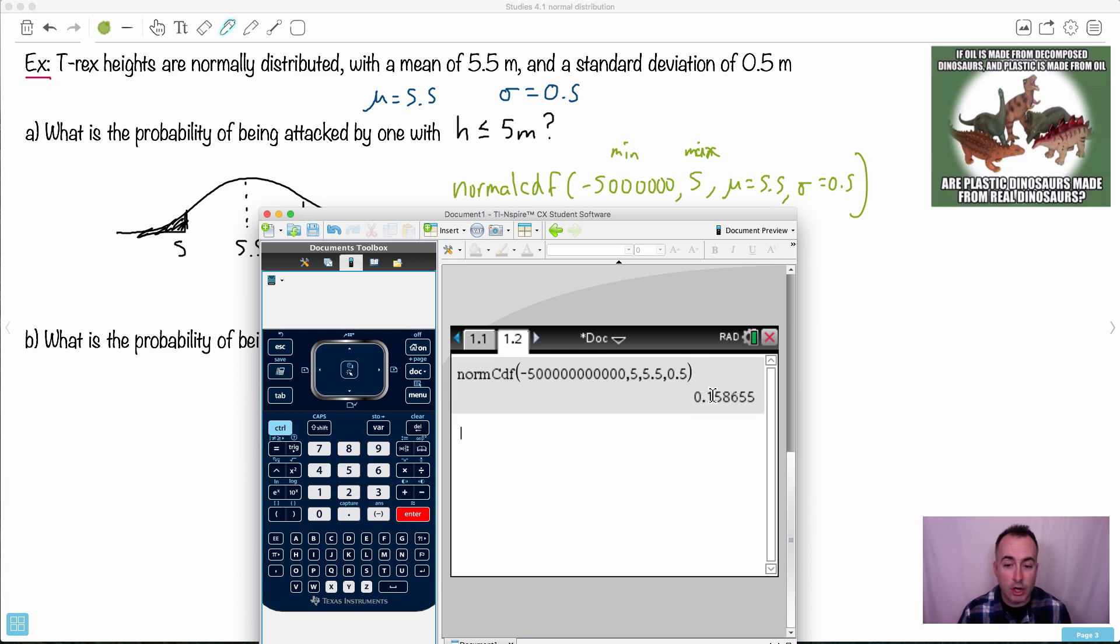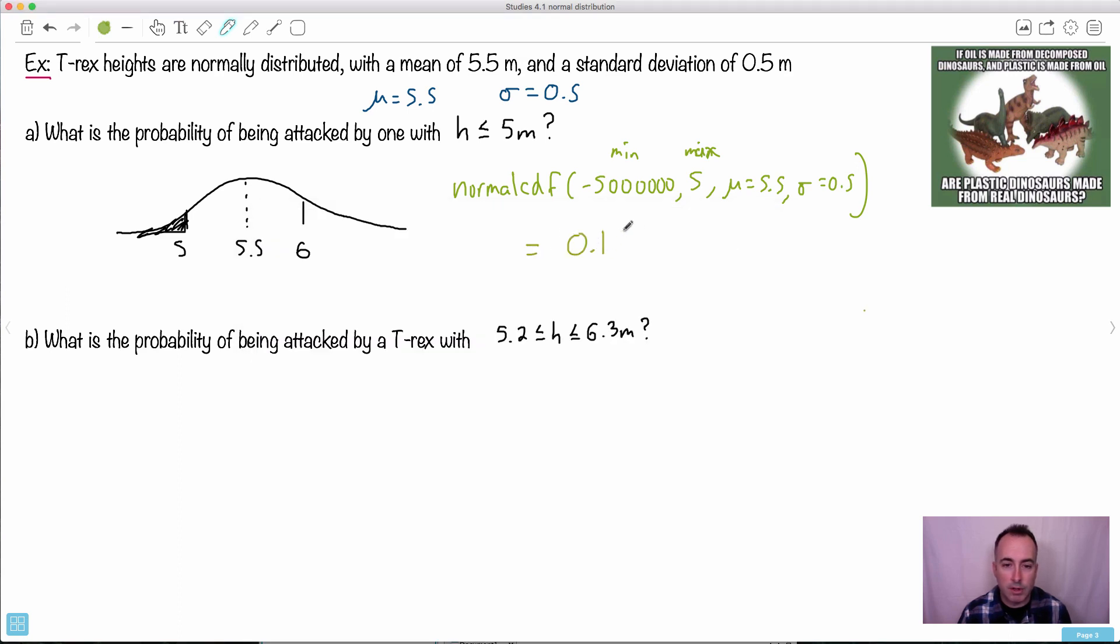It tells me the area under the curve is 0.158. If we want three significant figures, we do, then we put in 0.159. So that would be the answer here, 0.159. That would be the probability.